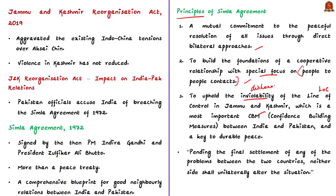The 1972 Shimla Agreement also includes a provision that pending the final settlement of any problems between India and Pakistan, neither side shall unilaterally alter the situation — meaning both sides should not unilaterally change the status quo in Jammu and Kashmir. According to Pakistani officials, this provision was claimed to have been breached by India. However, the author notes it is ironical because Pakistan itself had altered the situation in Pakistan-occupied Kashmir several times. The author tells that if Pakistan decides to undermine the Shimla Agreement by accusing India of breach, it may have very serious complications for the Kashmir dispute — potentially pressing the reset button on India-Pakistan relations back to 1948.